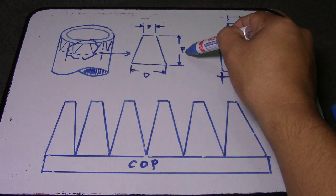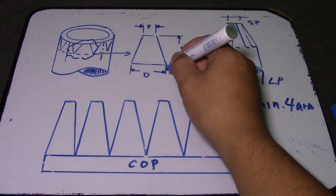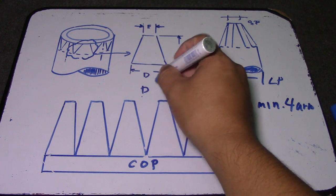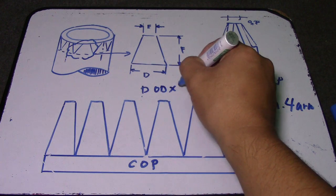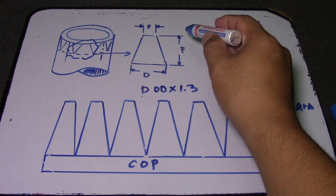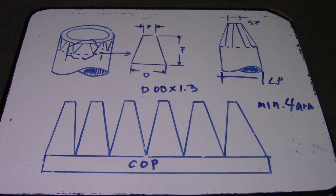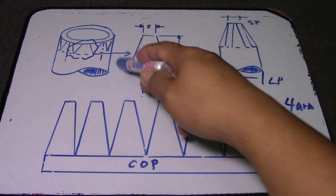Now we have letter F. To get letter F: difference of the pipe outside diameter (OD) multiplied by 1.33. That is the minimum. So difference of outside diameter multiplied by 1.33 gives you letter F. This is the full computation to get the layout from this pipe.